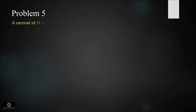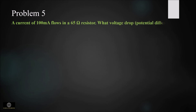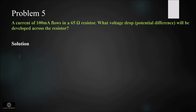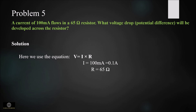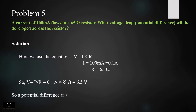A current of 100 milliamp flows in a 65 ohm resistor. What voltage drop or potential difference will be developed across the resistor? Using the equation V = IR, where I = 100 milliamp = 0.1 ampere and R = 65 ohm, substituting these values gives voltage as 6.5 volt. So a potential difference of 6.5 volt is developed across the resistor.